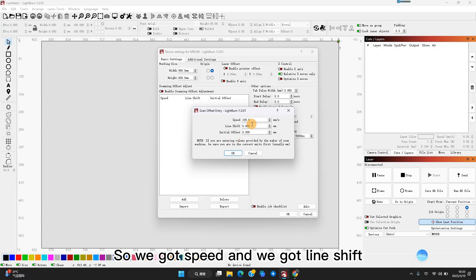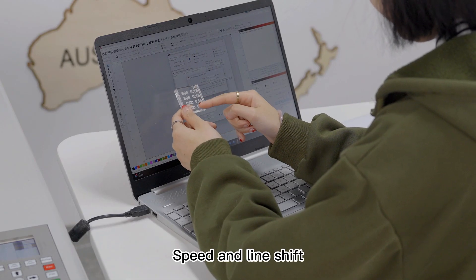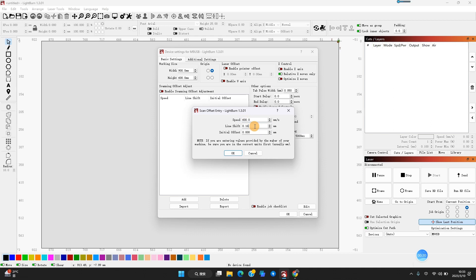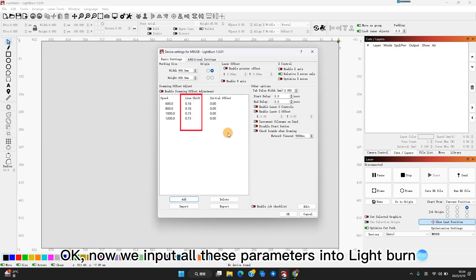We've got speed and line shift. Speed and line shift. Okay, now we input all these parameters into Lightburn.